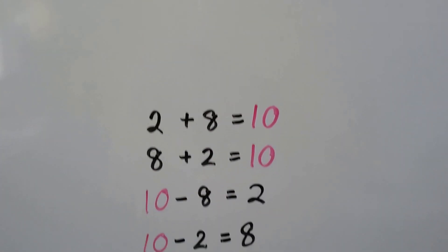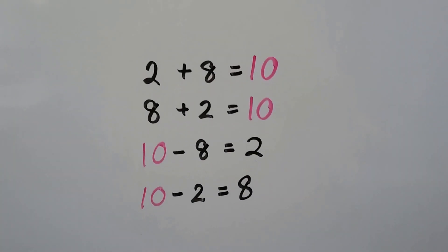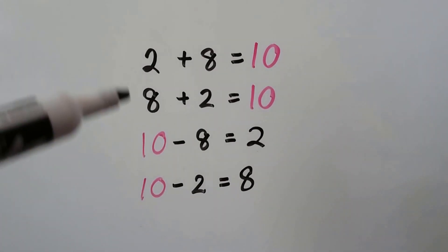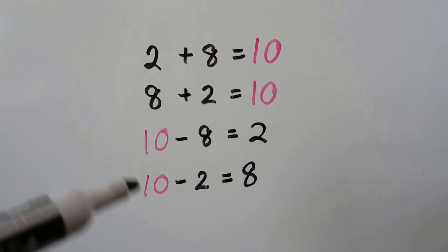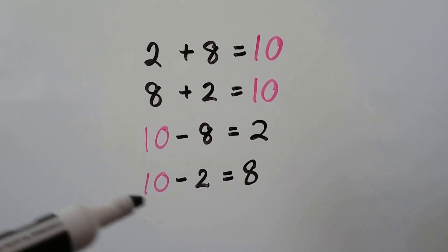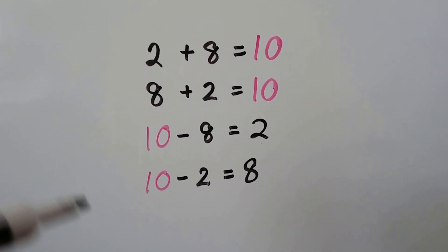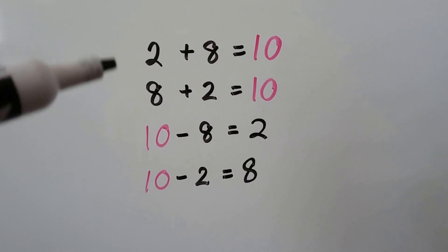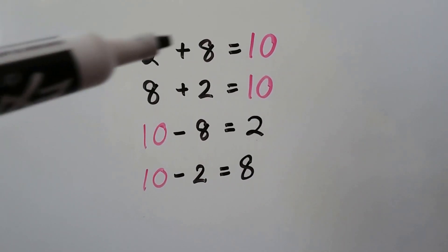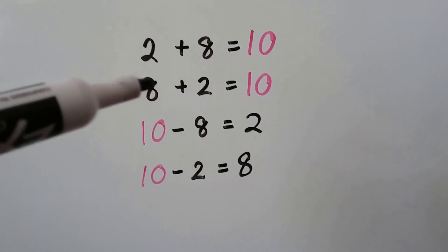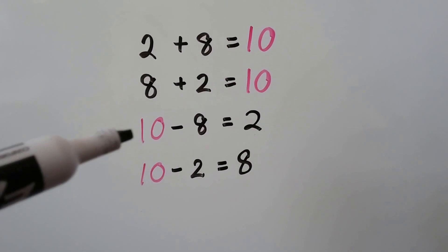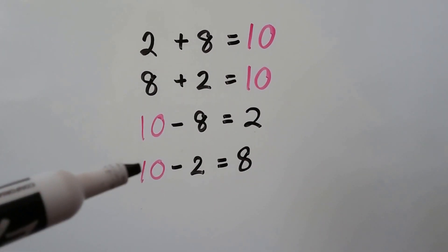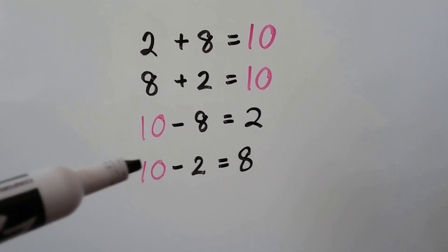Here we have another fact family: 2, 8, and 10. We have 2 addition sentences and 2 subtraction sentences. 2 plus 8 equals 10. 8 plus 2 equals 10 — see how they traded places? And 10 minus 8 equals 2, and 10 minus 2 equals 8.